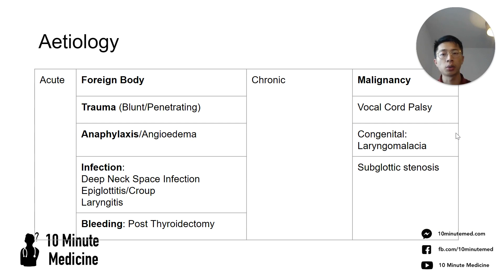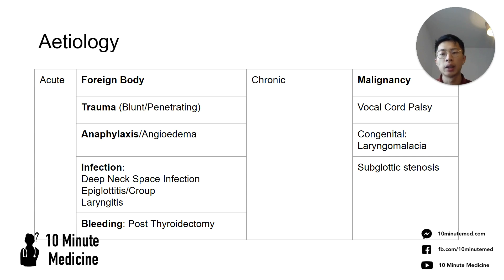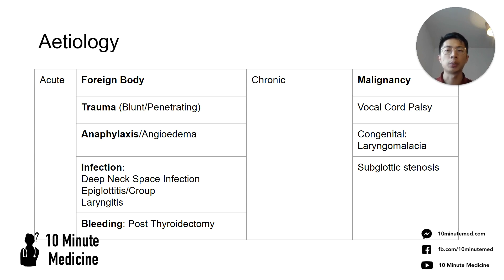The causes can be split into acute and chronic. Acutely, it can be caused by foreign bodies — very common in children but also in adults — as well as trauma, anaphylaxis, and infections such as deep neck space infections, epiglottitis, or croup in paediatric populations. Patients post-thyroidectomy can have bleeding around the larynx causing stridor or airway compromise. Chronically, the most frequent cause is malignancy.